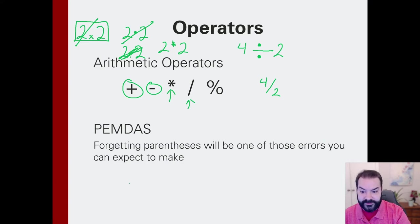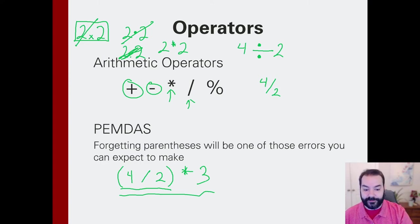There is some PEMDAS going on as well. If I have my parentheses going on here, we all understand that, please excuse my dear Aunt Sally, the parentheses happen first, then the two times three would calculate out. So four divided by two, two times three, six.